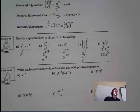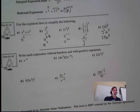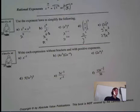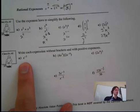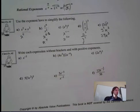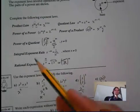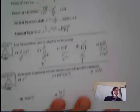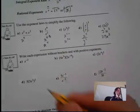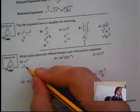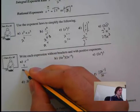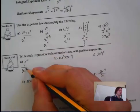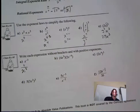Now: write each expression without brackets and with positive exponents. We have negative exponents here — that is the integral exponent rule. For a negative exponent, it's just 1 over that exponent. So in this case, x to the negative 3 becomes 1 over x to the 3. That's how we make it positive.